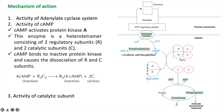Glucagon hormone binds on its receptor; when this receptor gets activated, it further activates GTP regulatory protein — GTP being guanosine triphosphate. Activation of these regulatory proteins activates the adenylate cyclase system, which converts ATP into cyclic AMP. The second step is activity of cyclic AMP: cyclic AMP activates protein kinase A enzyme, which contains two regulatory subunits and two catalytic subunits.